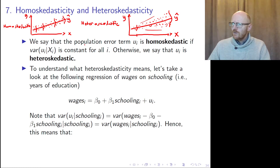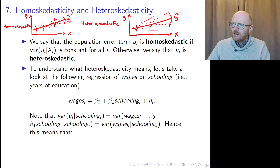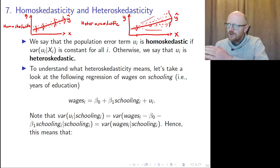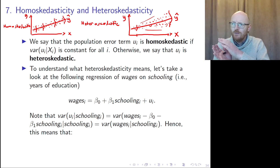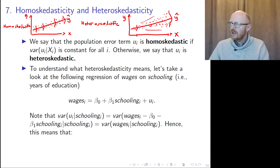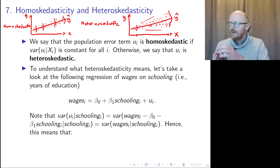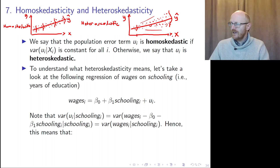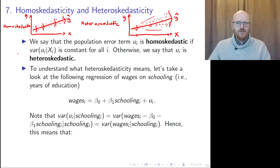So, if the error term is equally dispersed around the regression line no matter which x you look at, you have homoscedasticity. If the dispersion of the residuals around the sample regression line is dependent on the level of x, then you have heteroscedasticity.